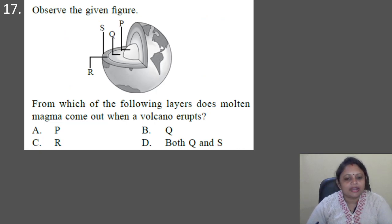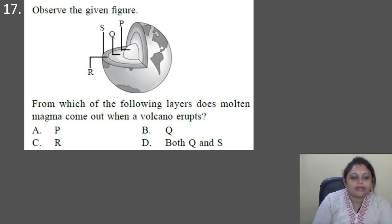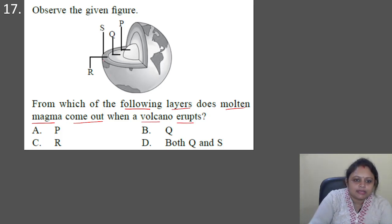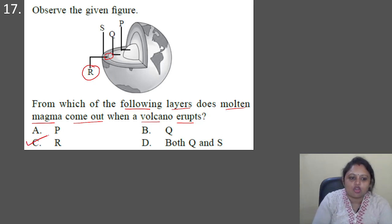Next question: from which of the following layers does molten magma come out when a volcano erupts? Options: A — P, B — Q, C — R, D — both Q and S. The correct answer is option C: the molten magma comes out from layer R.